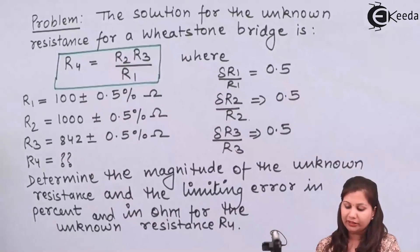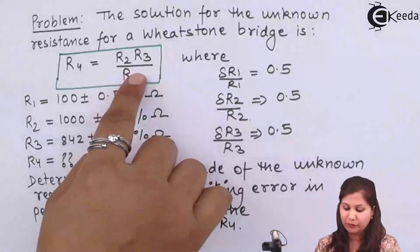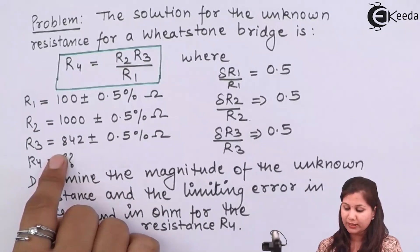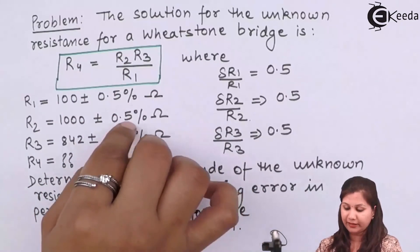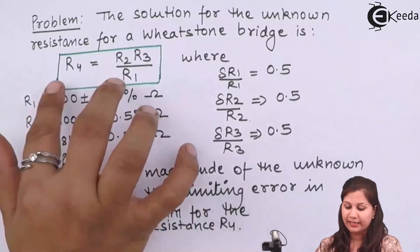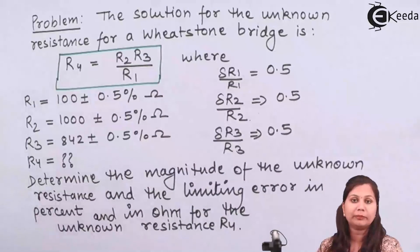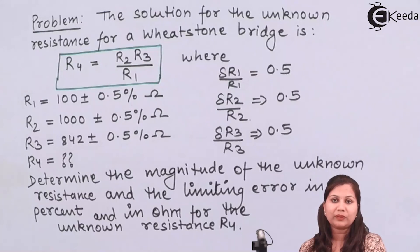In this problem, we found the value of the unknown resistance using the Wheatstone bridge formula, then determined the percentage limiting error and the limiting error in ohms, and finally the range of values for the unknown resistance. I hope this problem is now clear to you. Thank you.